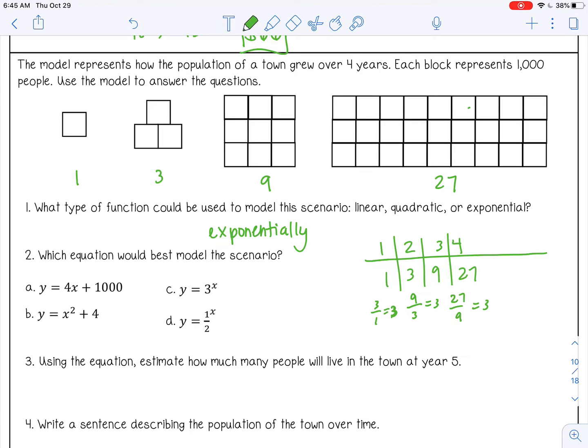Which equation would best model this scenario? So we're looking for an exponential. So A is linear. B is quadratic. C and D are both exponential. C is an exponential growth, where the numbers are getting bigger. And then D is an exponential decay, where the numbers would be getting smaller. So these numbers are getting bigger. So it has to be C.